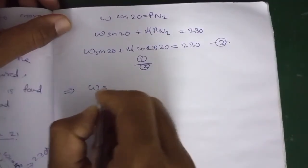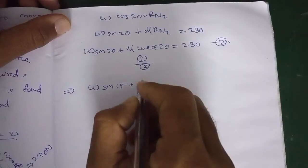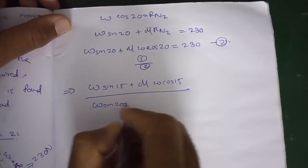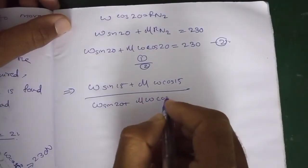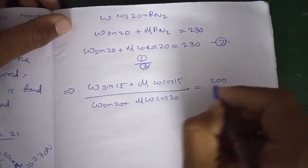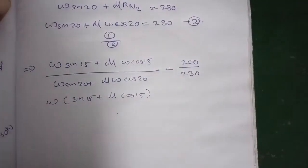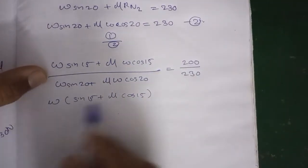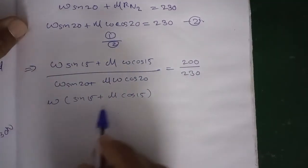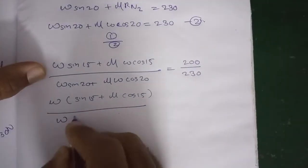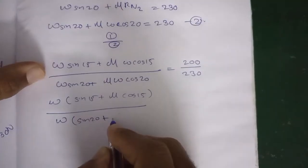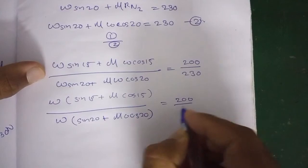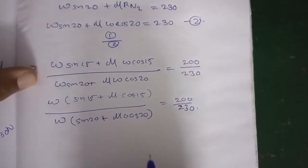Dividing the two equations: (W sin 15 plus mu cos 15) divided by (W sin 20 plus mu cos 20) equals 200 divided by 230.